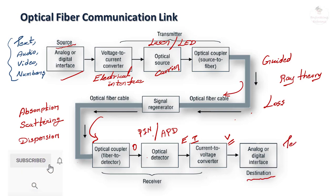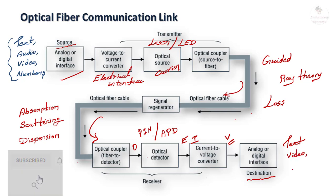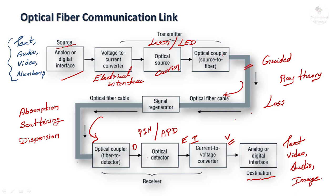At the destination, we receive text, video, audio, or images. These are the basic elements involved in an optical fiber communication link. In upcoming videos we will study in detail the structure and types of optical fiber cable, as well as the laser source and photodiode.